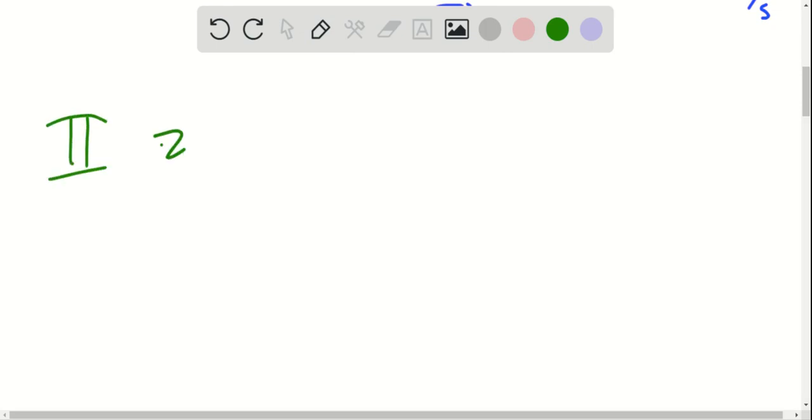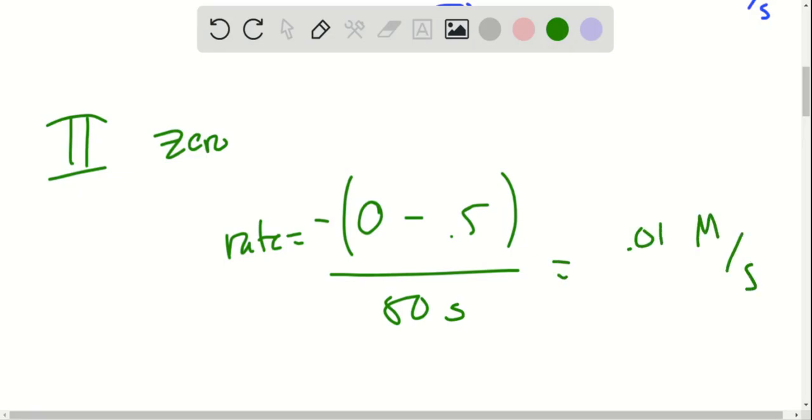Our second data set is zeroth order. The rate is going to be equal to, at 100 seconds we have zero, put a minus sign up front. At 50, we have 0.5. That's over 50 seconds. That'll come out as 0.01 moles per liter per second.